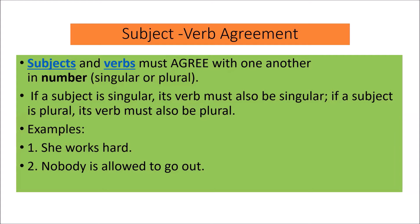For example, here you can see: 'She works hard' and 'Nobody is allowed to go out.' When I say 'she works hard,' she is a singular subject, third person. So with a singular third person subject, we use S or ES with the main verb. That's why it's written 'she works.'